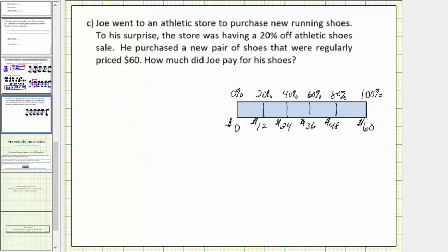So using the bar, we can see that 20% of $60 is $12, and therefore Joe saved $12 from the sale. Joe paid $60,